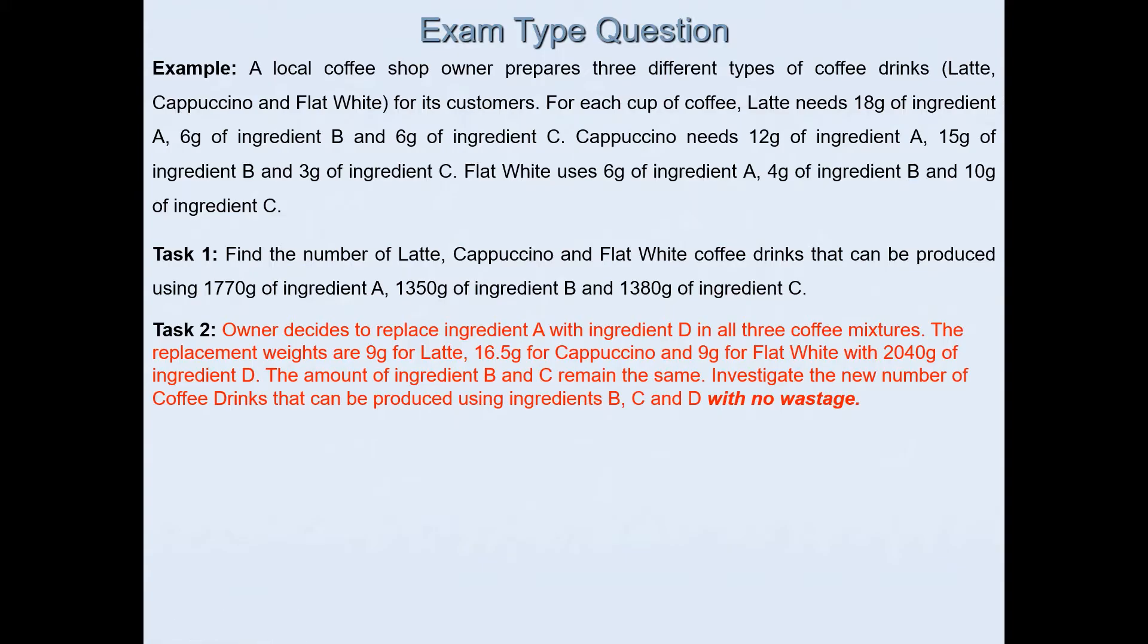Task 2 says: Owner decides to replace ingredient A with ingredient D in all three coffee mixtures. The replacement weights are 9g for latte, 16.5g for cappuccino and 9g for flat white with 2040g of ingredient D available. The amount of ingredient B and C remain the same. The question asks to investigate the new number of coffee drinks that can be produced using ingredients B, C and D without any wastage.